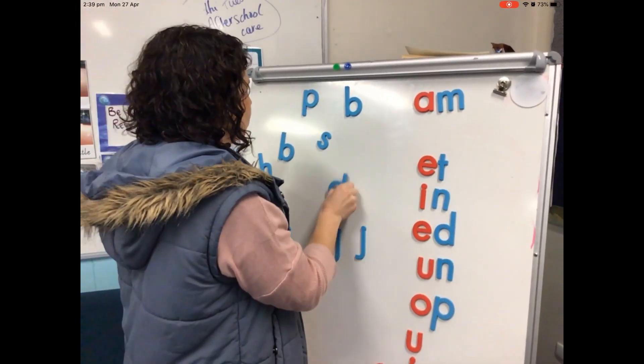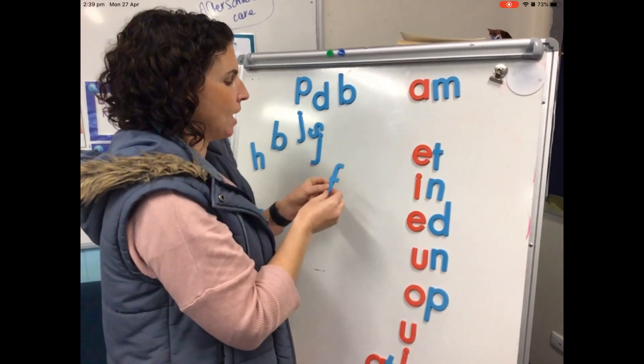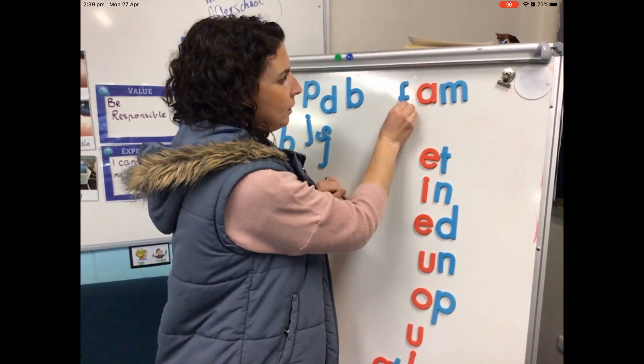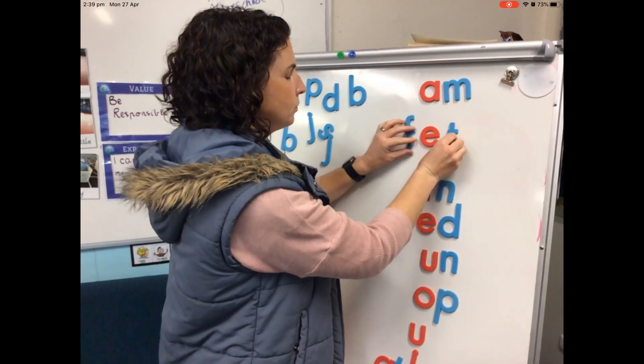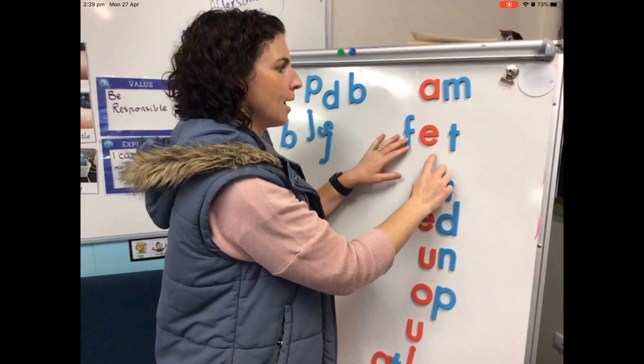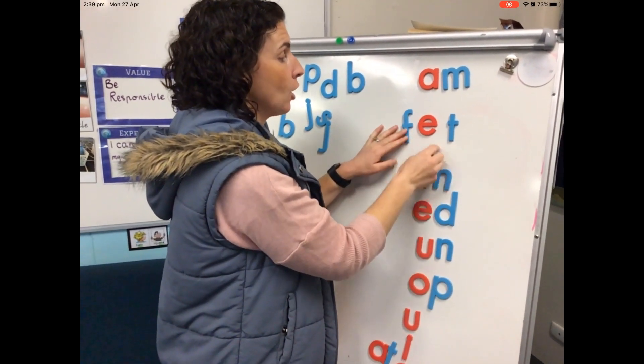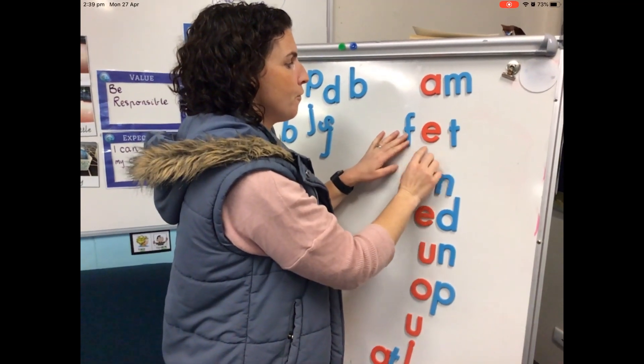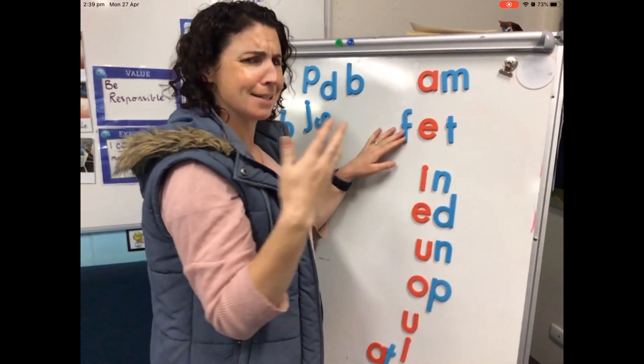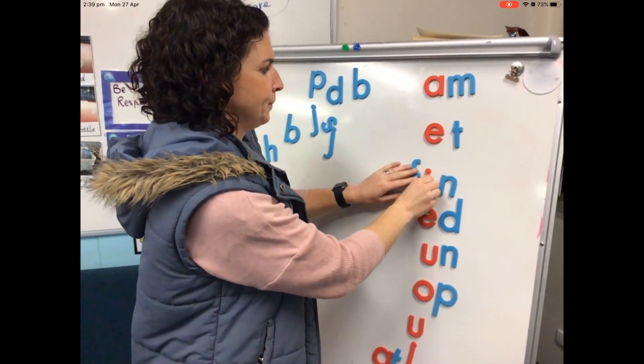Another letter we've been learning about this week was the letter F, wasn't it? So what we could do is we could try and use F as different starting sounds. So we tried F there. Now here I've got E-T. E-T. E-T. E-T. Alright, now if I put my F in front now that I know that word family. Fet. Fet. Fet. Is that a word?